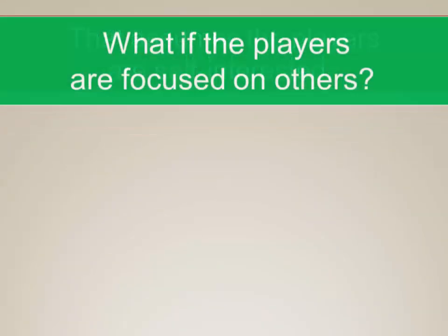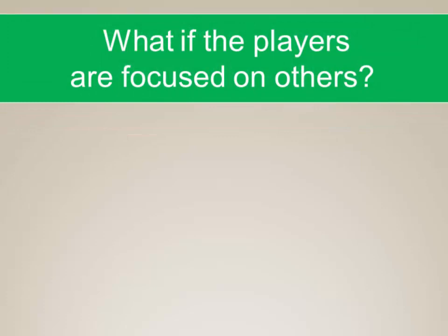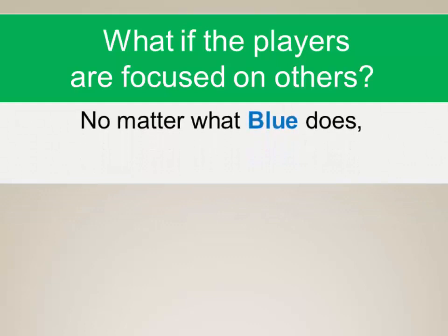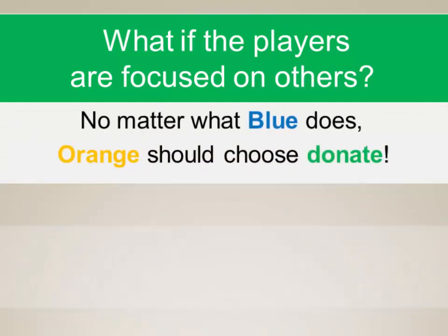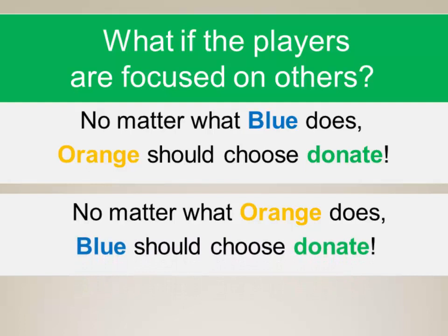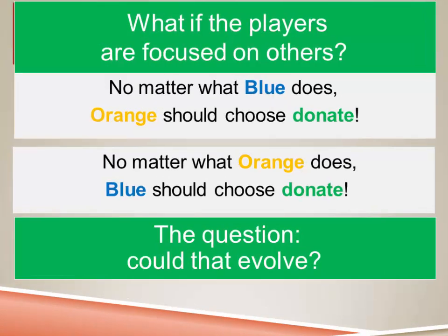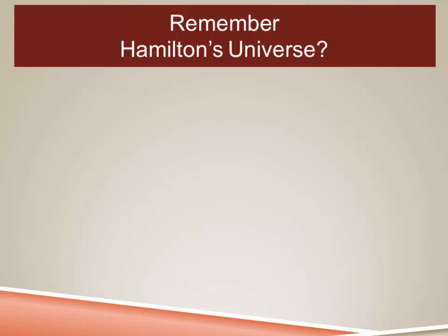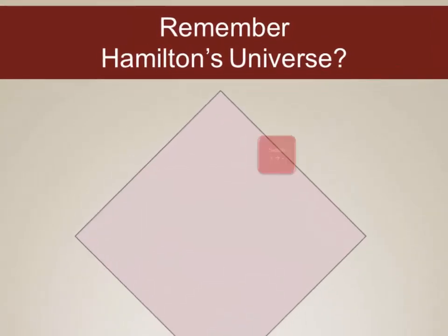This assumes the players are self-interested. What if the players were focused on the welfare of others more than themselves? Then whatever blue does, orange should choose donate, and whatever orange does, blue should choose donate — and they'd end up again and again in the highest-payout cooperative corner. But the question is: is it really believable that an organism would evolve to be entirely altruistic, constantly working to benefit the reproductive fitness of others while sacrificing its own?